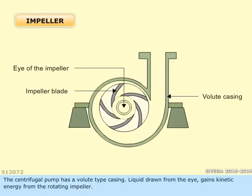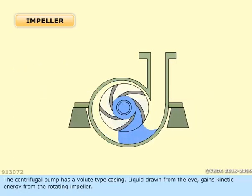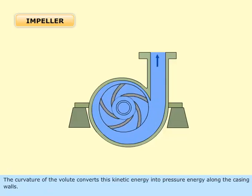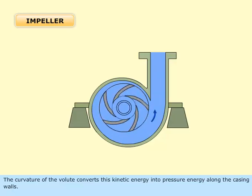The centrifugal pump has a volute type casing. Liquid drawn from the eye gains kinetic energy from the rotating impeller. The curvature of the volute converts this kinetic energy into pressure energy along the casing walls.